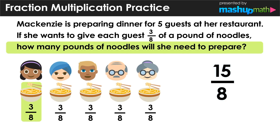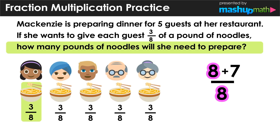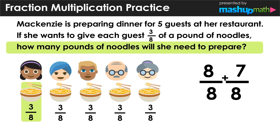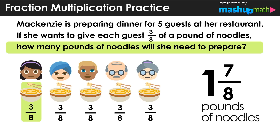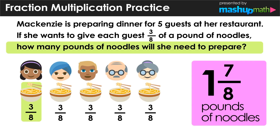Now we should ask ourselves: can my answer be simplified? The answer in this case is yes. We can think of 15 over eight in a different way. We can change 15 to eight plus seven, because the sum of eight and seven equals 15. We chose eight because our denominator has a value of eight, and doing this allows us to split the fraction up. We can see that eight over eight equals one, which makes it easier to express our answer as a mixed number. We can conclude that she will need one and seven-eighths pounds of noodles in total to serve her five guests.